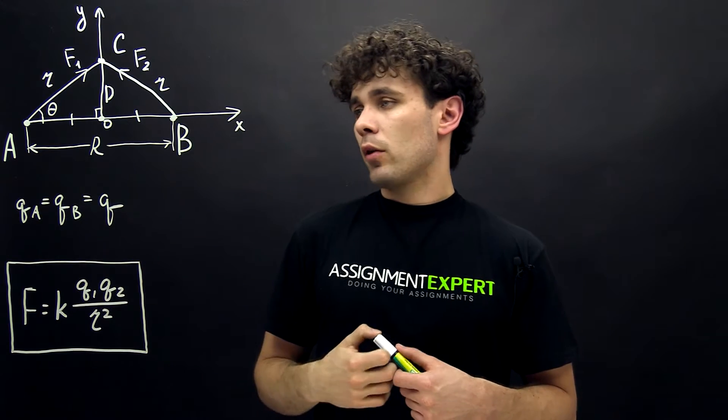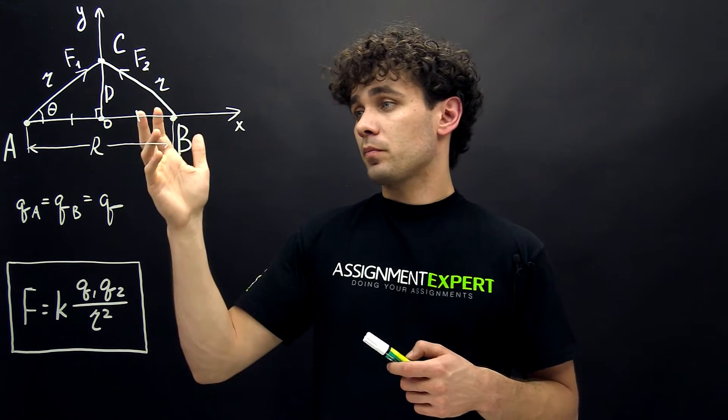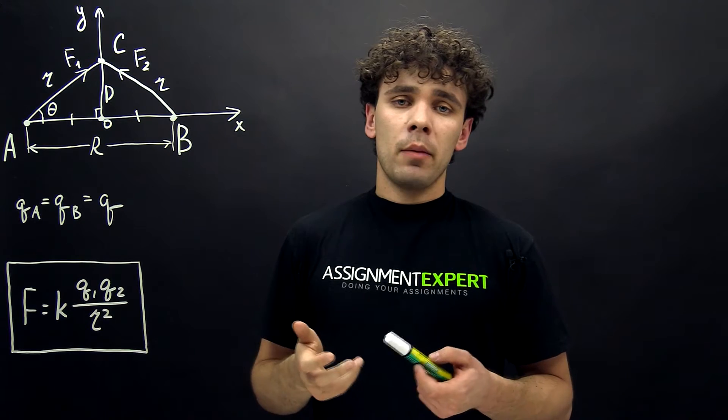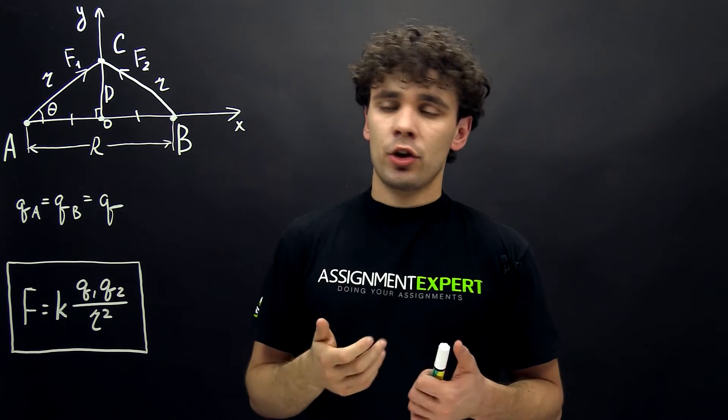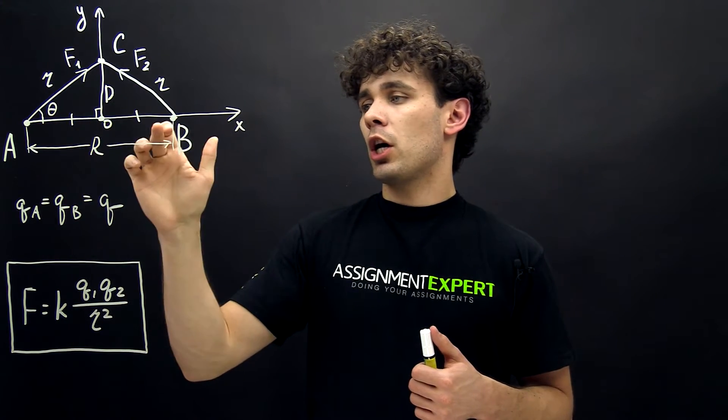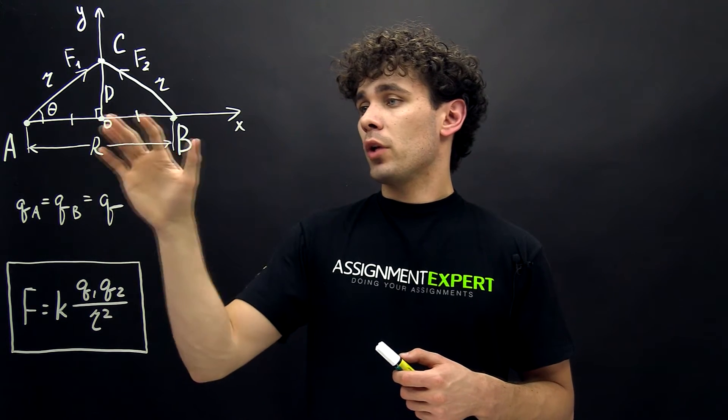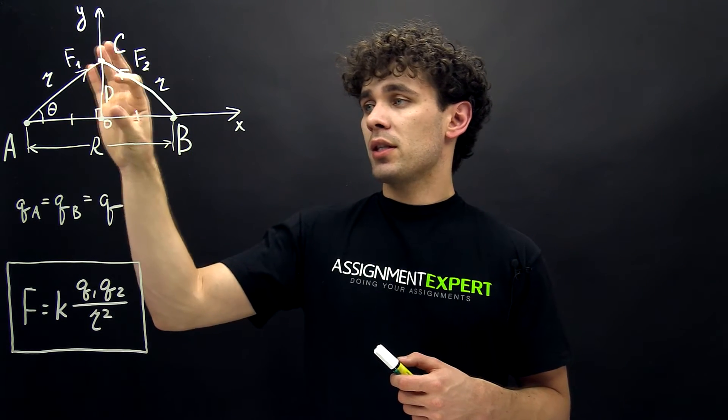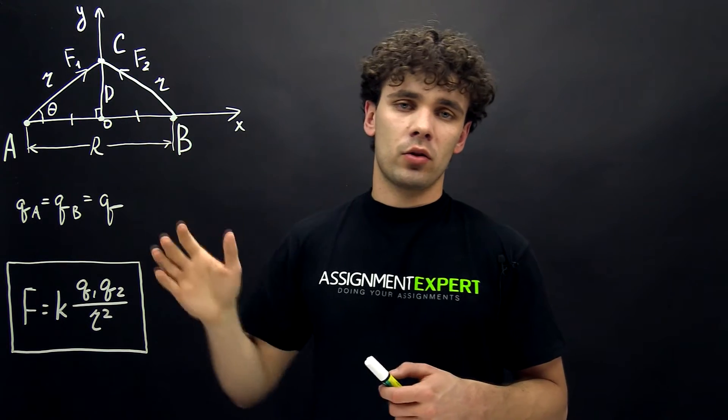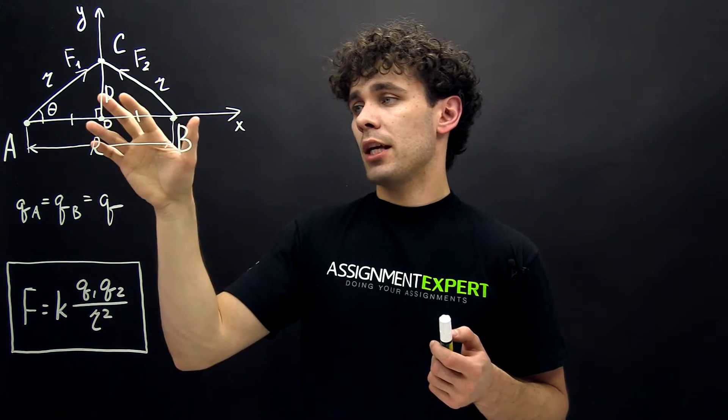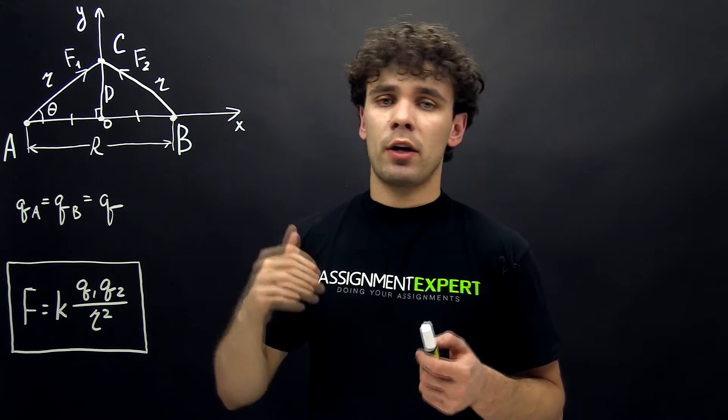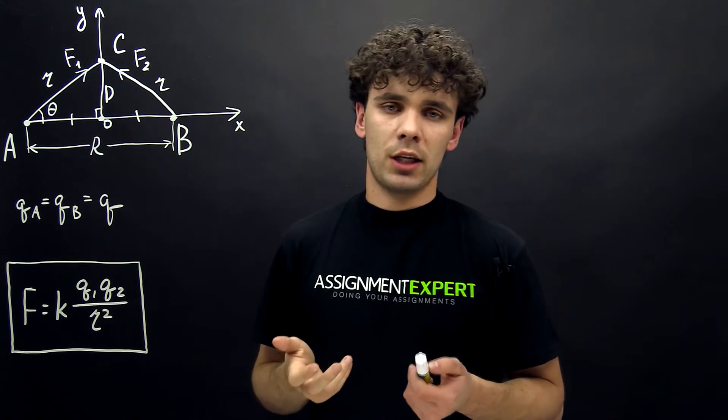Now let's have a look at our triangles. From the name, the perpendicular bisector divides the line R into two equal parts. So we have two equal sides here, and this side is equal for both triangles. Therefore, they're the same because we have the same two sides and same angles. Therefore, the third side is also the same.